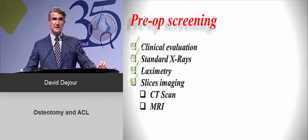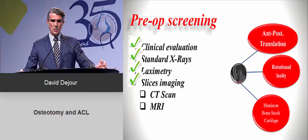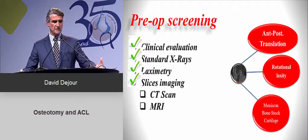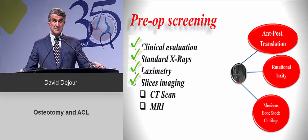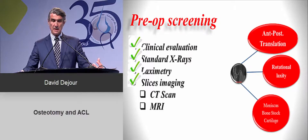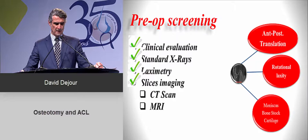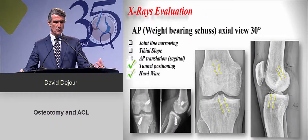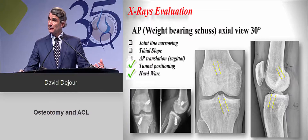Pre-operative screening is so important. You will use a clinical evaluation, standard X-rays, laximetry, and slice imaging such as CT or MRI. You will quantify the anterior-posterior laxity, the rotational laxity, the meniscus status, bone stock, and cartilage. When you have all that, you will be able to start planning.